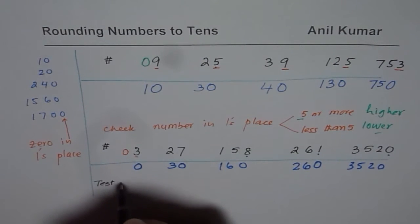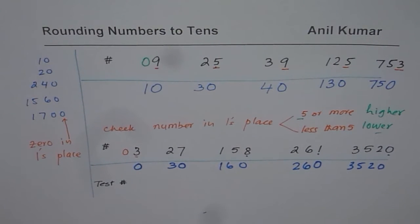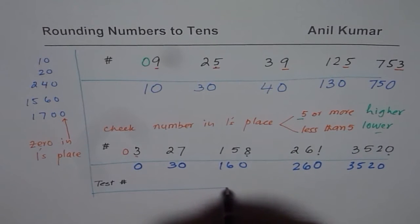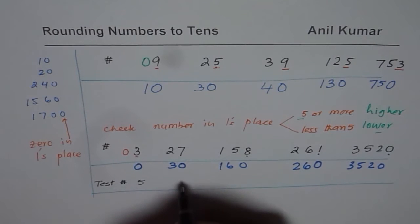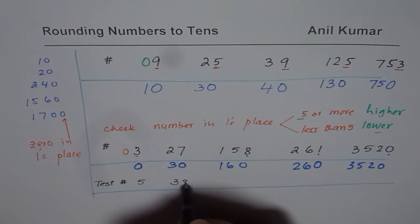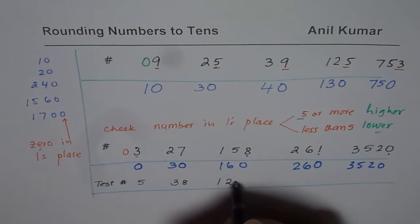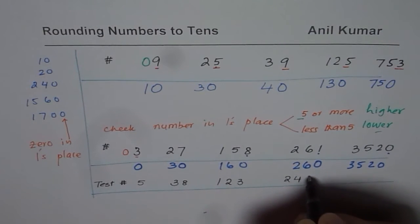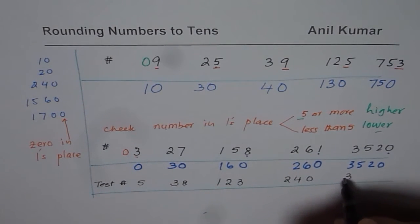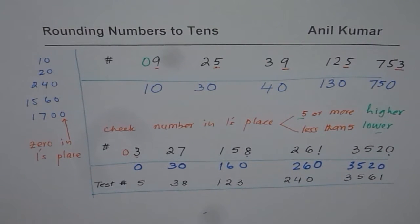So now, we have some test questions for you. These are the numbers which you need to round to the nearest tens. So the numbers for you are 5, 38, 123, 240, and 3,561.